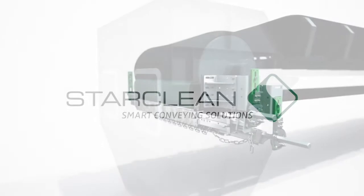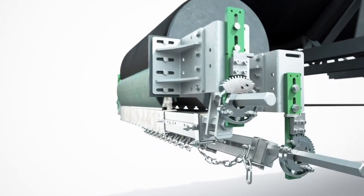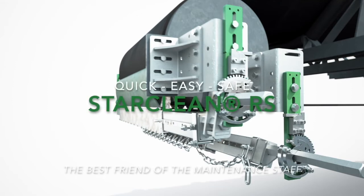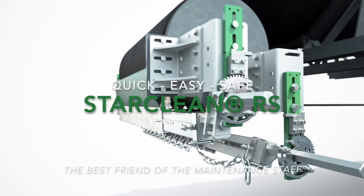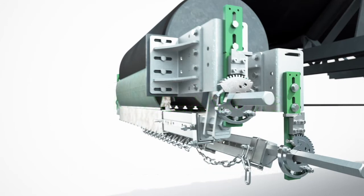StarClean invented a belt cleaner that is perfectly space-saving and allows safe, easy, and quick maintenance. The maintenance is performed from outside the transfer chute so that your staff is safe and protected from any danger that could appear by reaching into the conveyor system. You can change each scraper blade by extracting laterally. Let me show you.